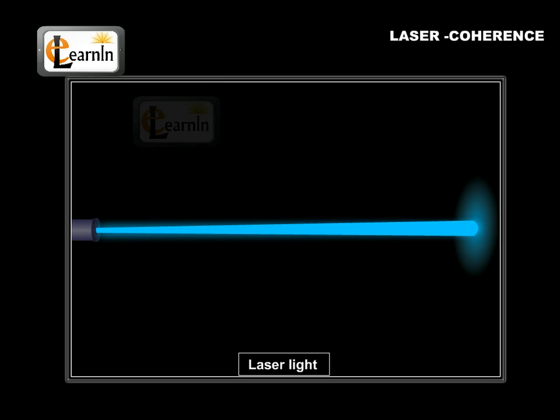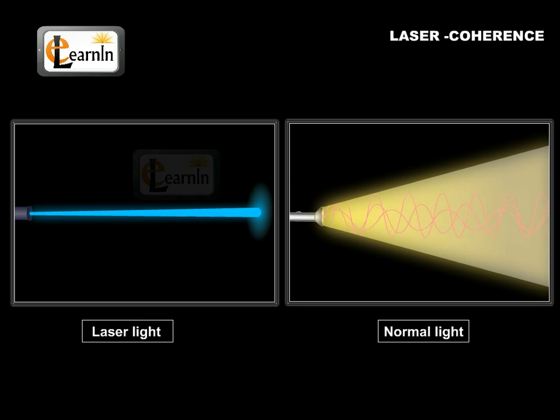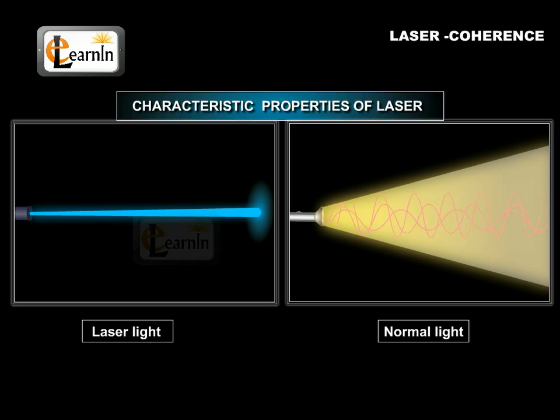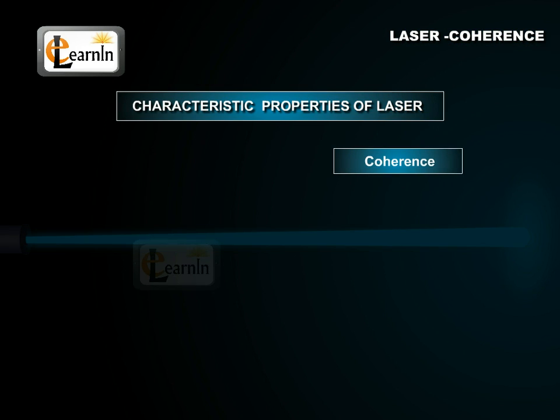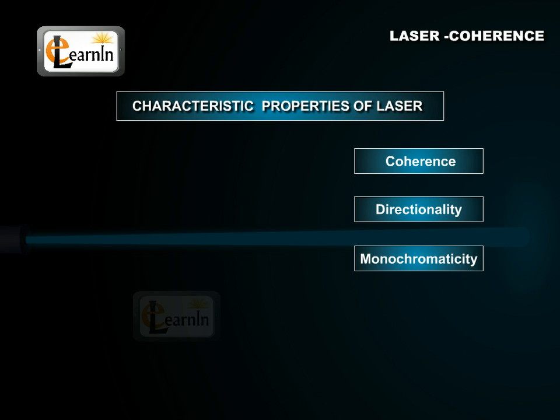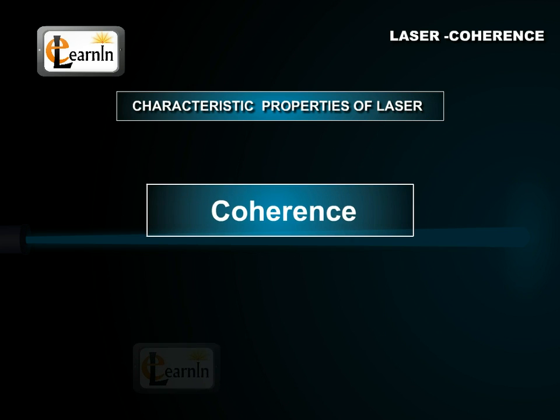Even though the laser is a source of light, it has some specific characteristic properties that distinguish it from an ordinary source of light. The salient features of a laser are coherence, directionality, monochromaticity, and high intensity. In this video, we're going to focus on coherence.